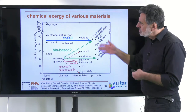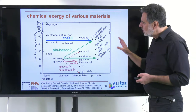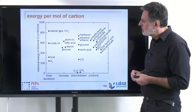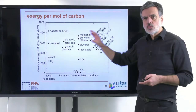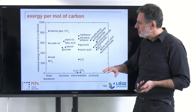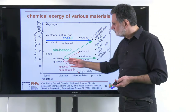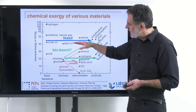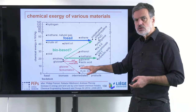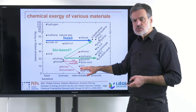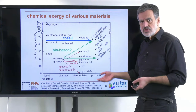Now, if we look again at this diagram, we can also look at it per carbon. Looking at the previous diagram, the exergy is lower if the components contain more oxygen — the higher the oxygen content, the lower the chemical exergy. If we look at exergy per mole of carbon, that levels things out a little bit.